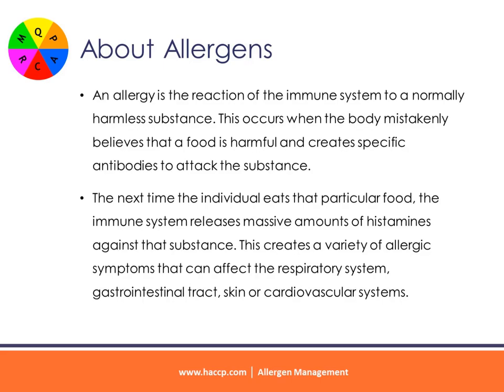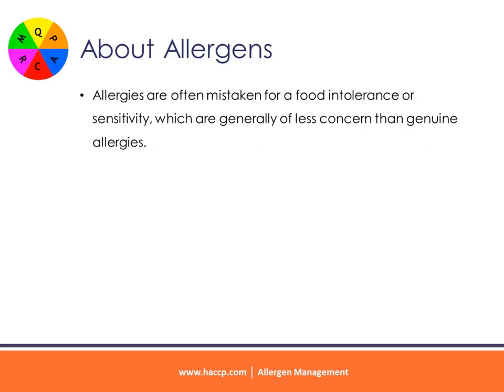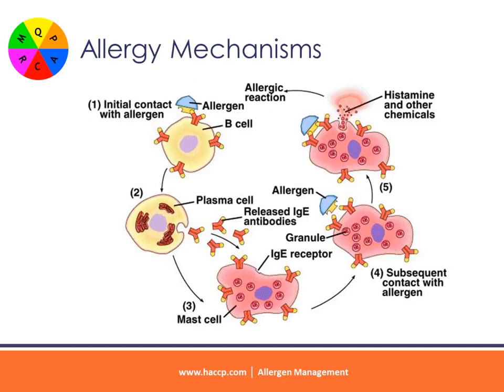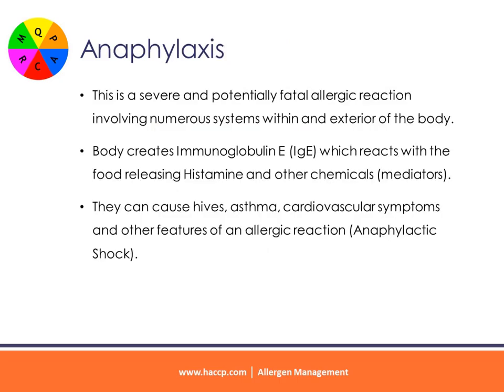These chemicals can cause a variety of allergic symptoms that can affect the respiratory system, gastrointestinal tract, skin, or cardiovascular system. Allergies are often mistaken for a food intolerance or sensitivity, which are generally of less concern than genuine allergies. Provided within the documented training materials is an example flow process showing the mechanics of food allergy reactions. Allergenic sensitivities vary from one person to another, and it is possible to be allergic to an extraordinary range of substances.